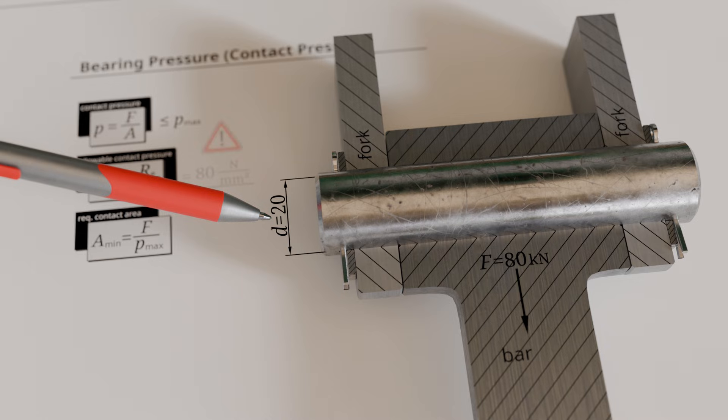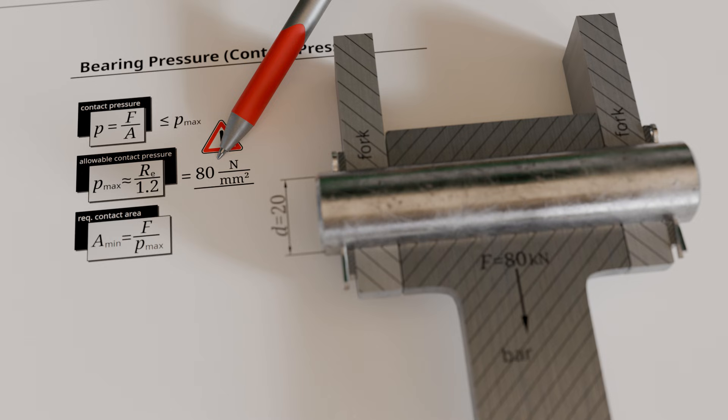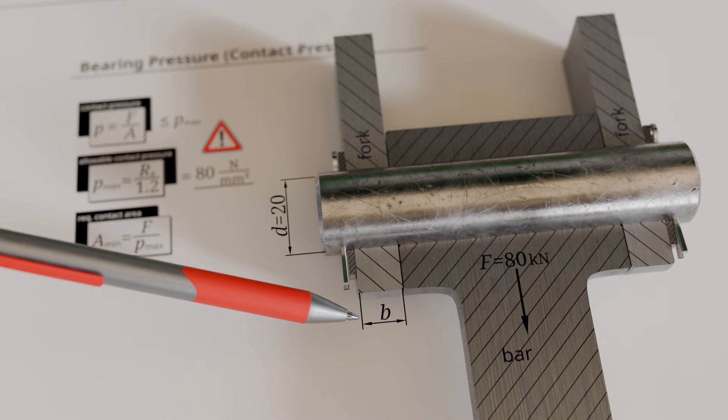The allowable bearing pressure on the pin must not exceed 80 newtons per square millimeter. The question is, how wide must the clevis width be in order to ensure that the allowable bearing pressure is not exceeded?